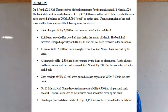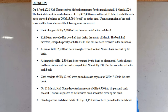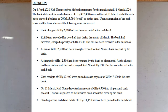On April 4th, 2020, Kofintam received his bank statement for the month ended 31st March 2020. The bank statement showed a balance of 417,400 Ghana cedis overdraft as at 31st March, whilst the cash book showed a balance of 525,990 Ghana cedis credit as at that date. Upon examination of the cash book and the bank statement, the following were discovered.